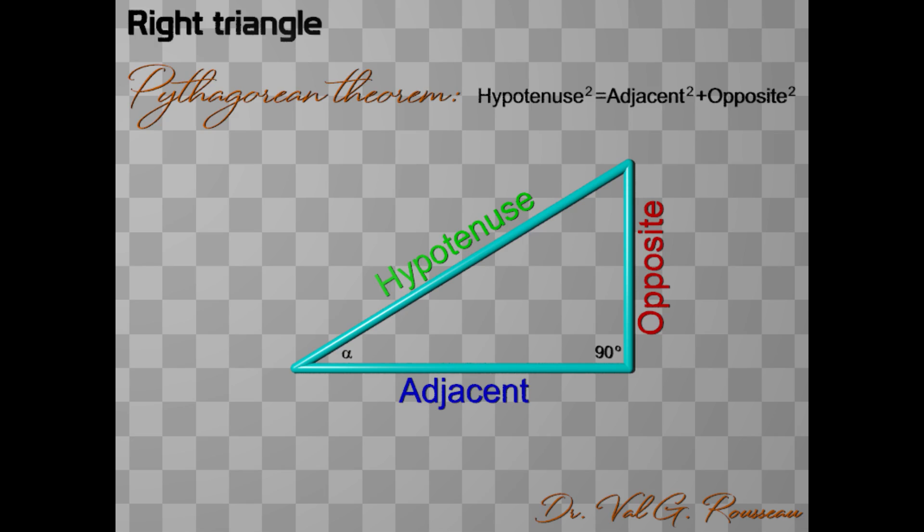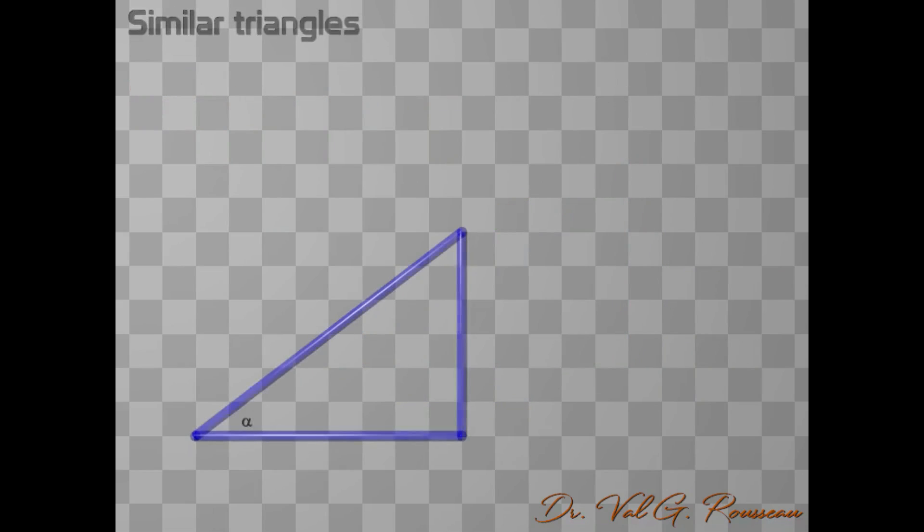To understand where the idea of trigonometry comes from, it is useful to consider the concept of similar triangles. Let us take a particular right triangle with our angle alpha whose value is unknown. But we know the length of each side.